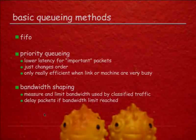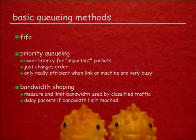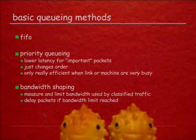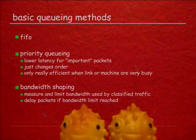The other two methods that matter are priority queuing — the idea being that you get lower latency for important packets, where 'important' depends on some kind of classification. All priority queuing really does is change the order in which we process the packets. This is only really efficient when your machine is under load or your link is overloaded, because otherwise you're processing them fast anyway.